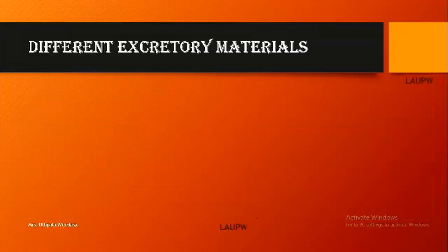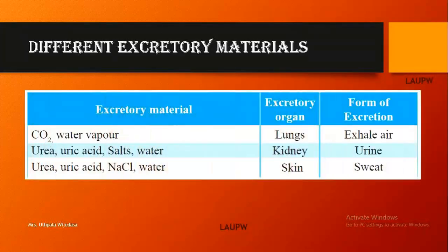There are different excretory materials and several organs responsible for their removal. Carbon dioxide and water vapour are removed from the lungs in the form of exhaled air. Urea, uric acid, salts, and water are removed from the kidneys in the form of urine.